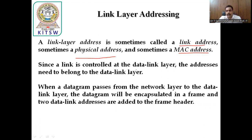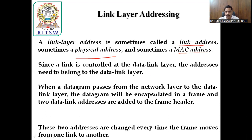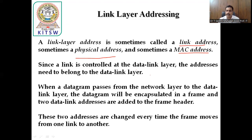When the datagram passes from the network layer to the data link layer, we get the datagram from the network layer and convert it into frames, which are then sent to the physical layer. The datagram may be encapsulated in a frame, and two data link addresses are added to the frame header. Framing means converting packets into frames. When we are converting the frames, two addresses will be added. These two addresses are from source node to destination node — node to node, from one device to another device.